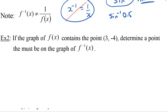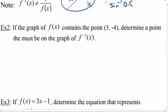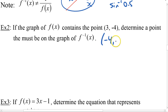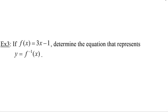Here's an example: if the graph of f(x) contains the point (3, −4), determine a point that must be on f⁻¹(x). You just switch the x and the y, so the answer is (−4, 3).